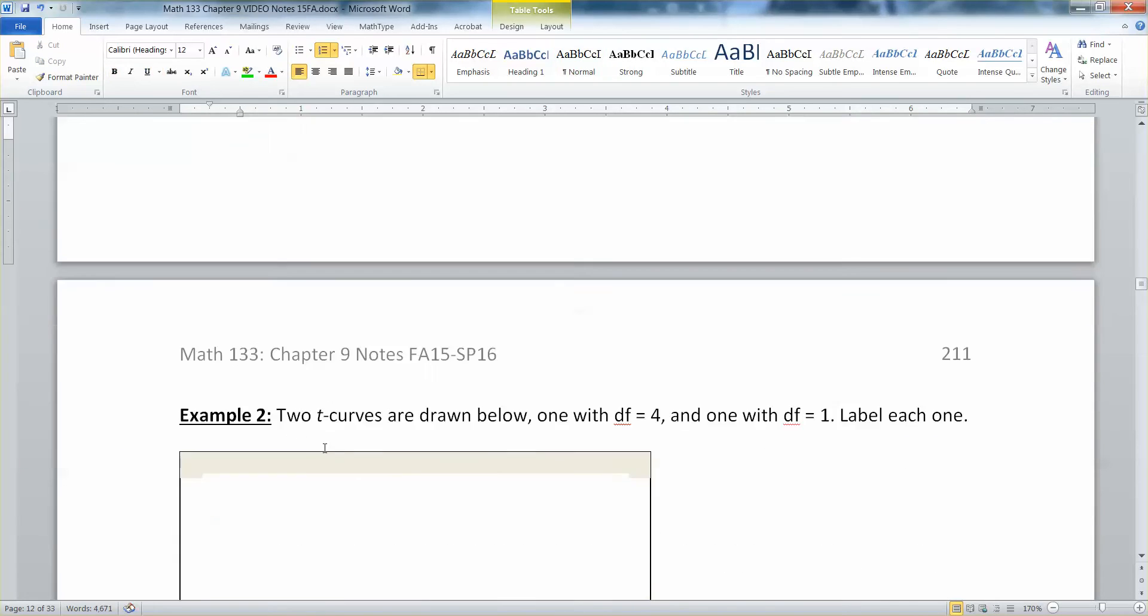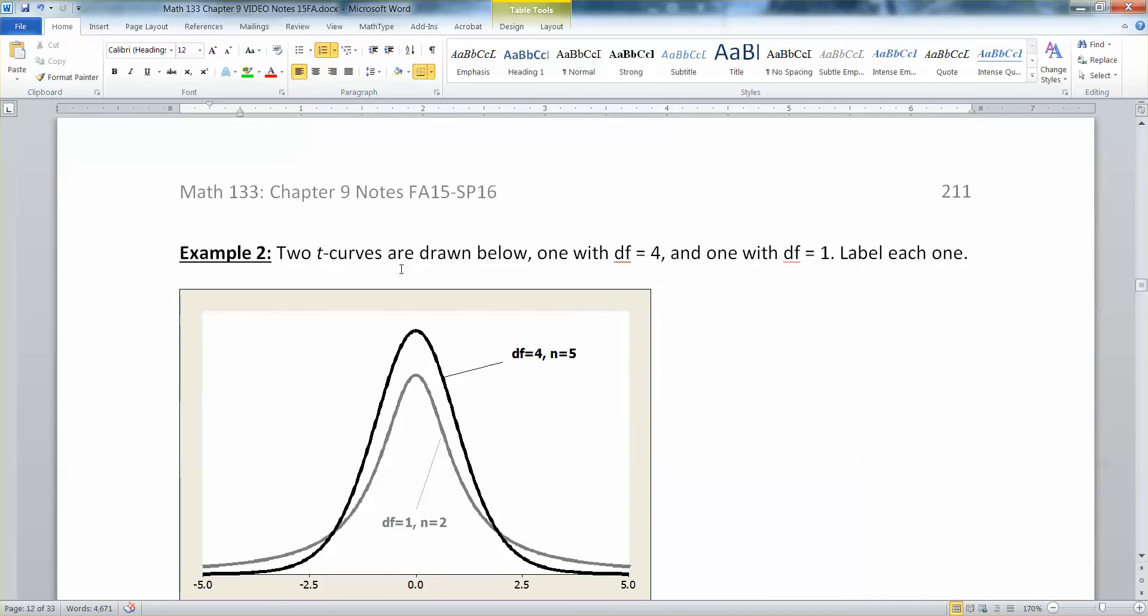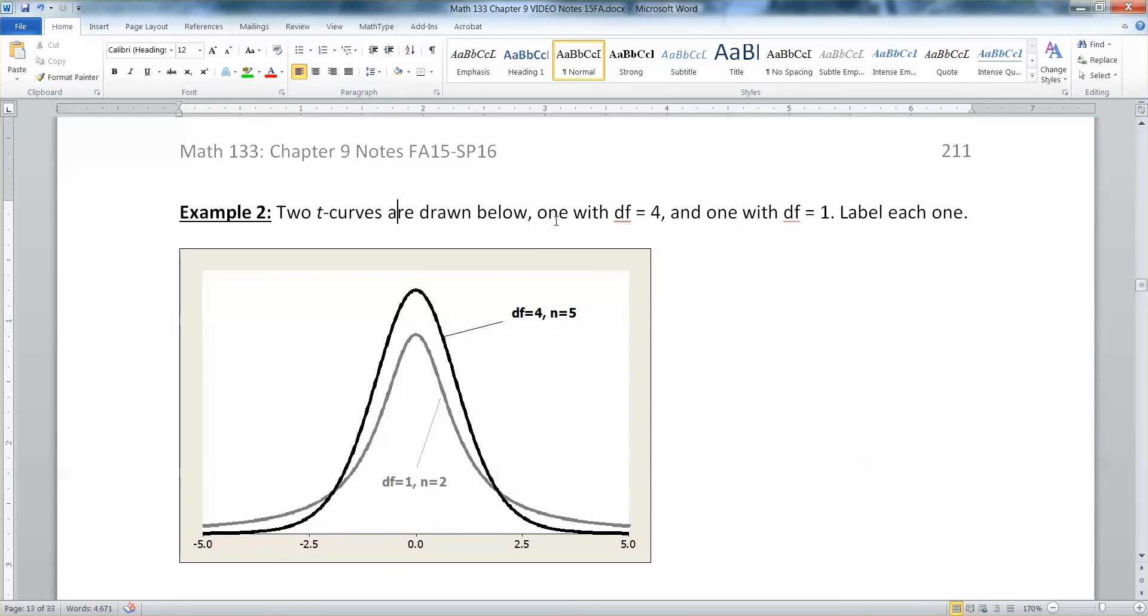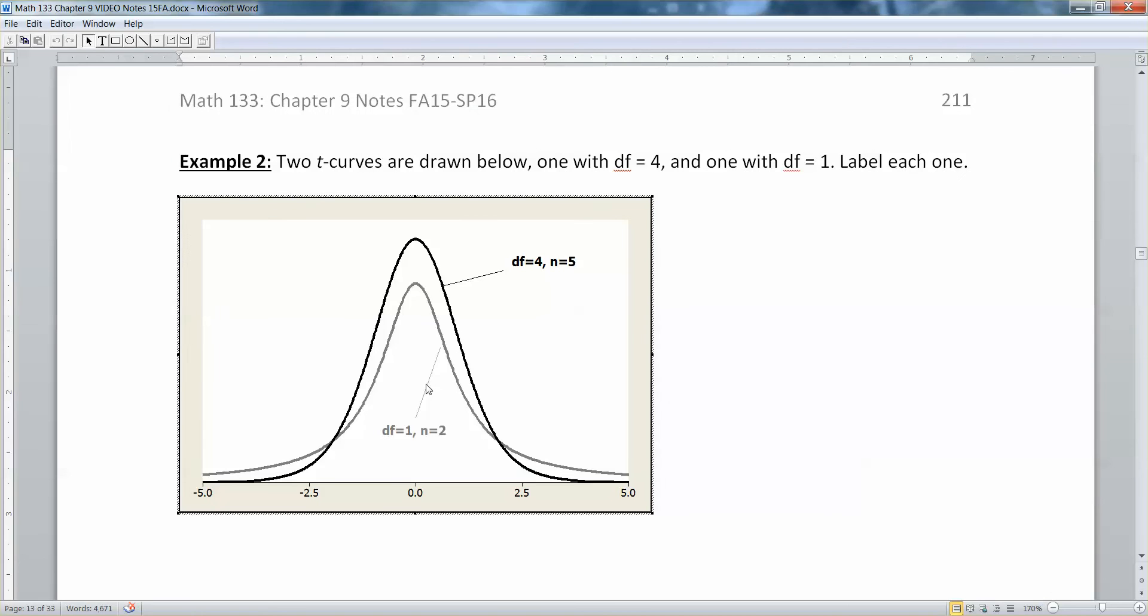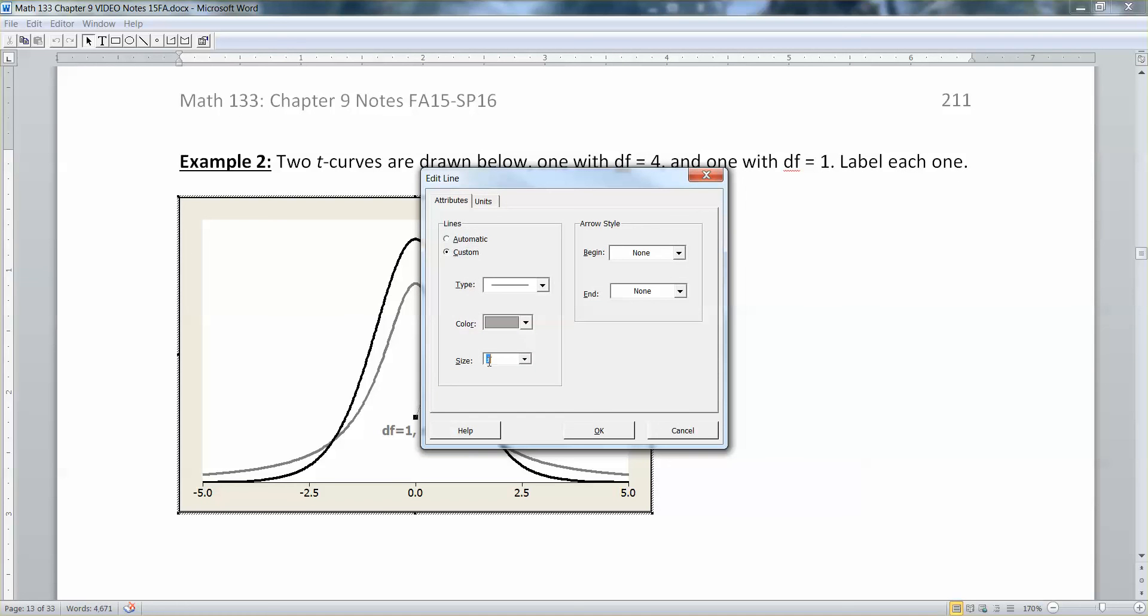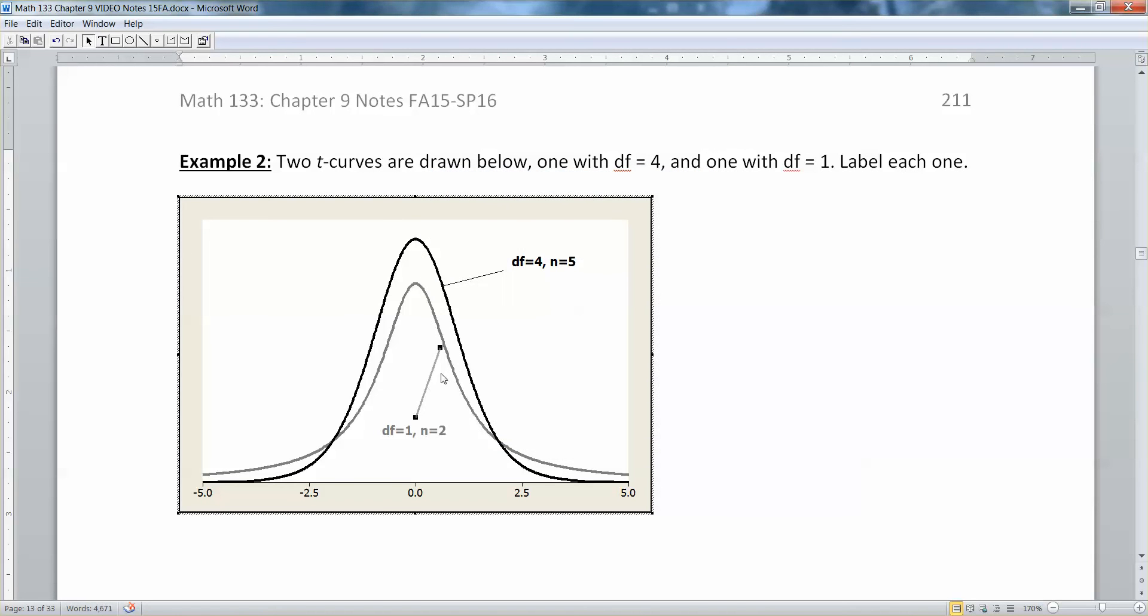I'm going to illustrate that in an example. I have two curves drawn below. One has degrees of freedom four and one degrees of freedom one. You're supposed to label each one. The degrees of freedom of one means that your sample size must have been two. Sample size of two, two take away one gets you one. You add one to get degrees of freedom.